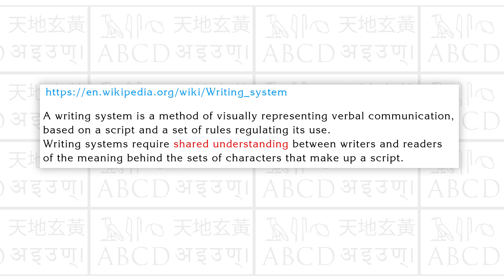We have thousands of languages in the world and hundreds of scripts exist to write them on paper. Following is an excerpt from the Wikipedia page for the writing system. A writing system is a method of visually representing verbal communication based on a script and a set of rules regulating its use.